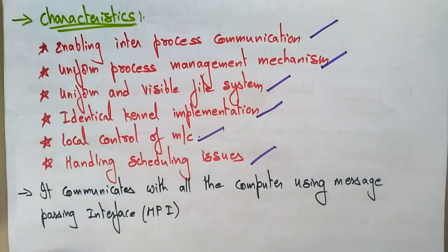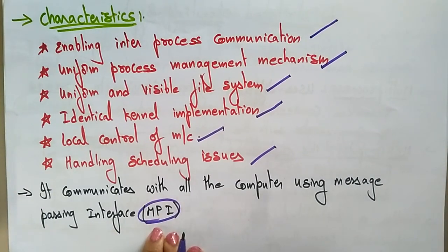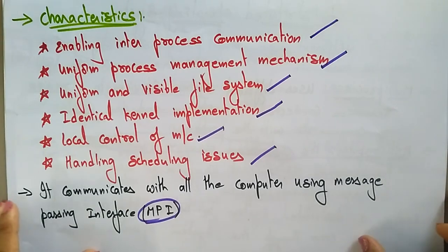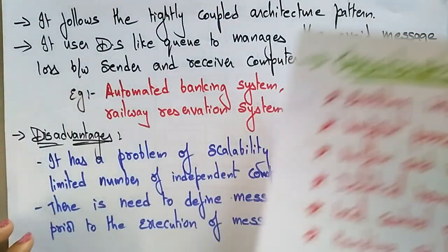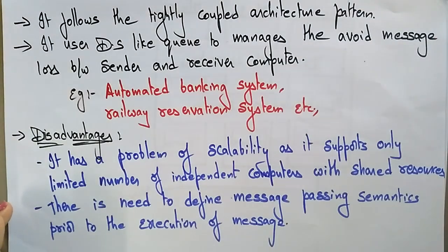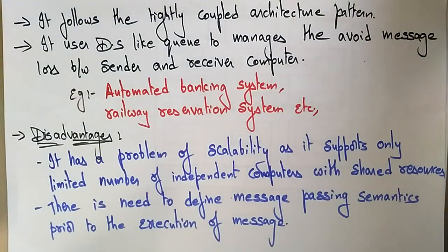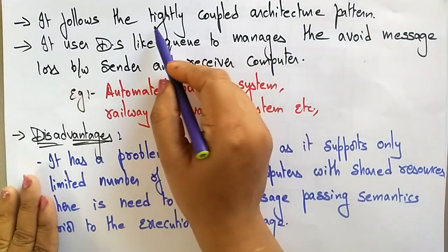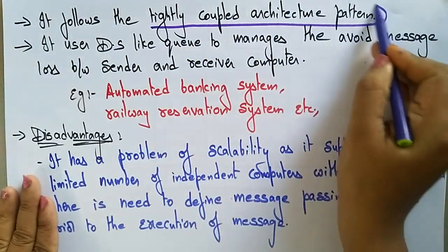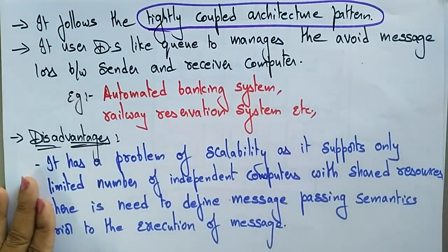The distributed operating system also communicates with all computers using MPI — Message Passing Interface. With the help of MPI, it communicates with all computers. It follows a tightly coupled architecture pattern, whereas the network operating system follows a loosely coupled architecture pattern. This is the main difference between NOS and DOS.